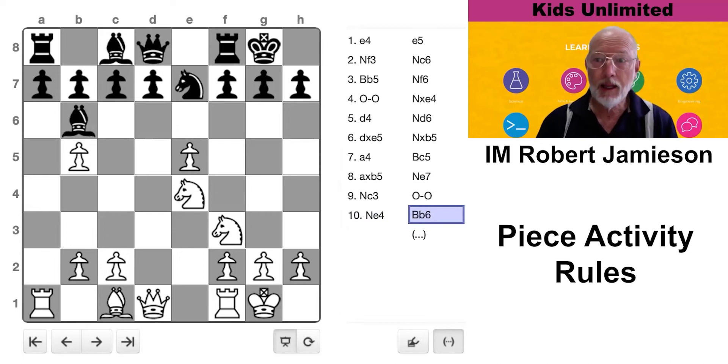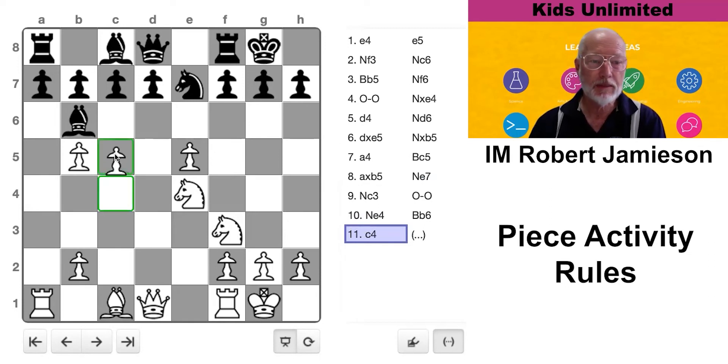Now, again, do I have a move here that can put him under a little bit of pressure? Maybe threaten something. Have a quick look. What would you play for white? Clearly, black's problem is his bishop is a little bit restricted. So the move to put him under pressure is c4. The threat of c5 and the bishop's trapped.